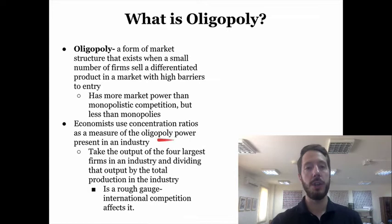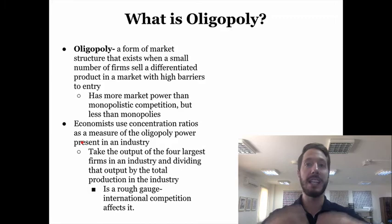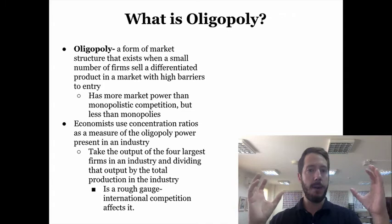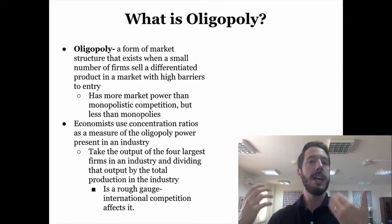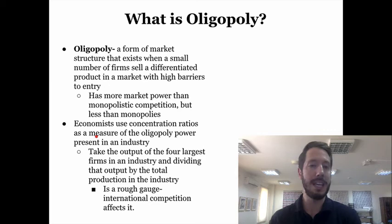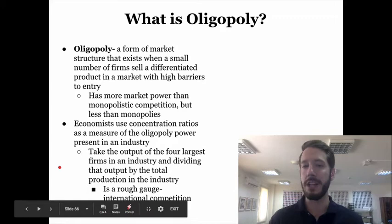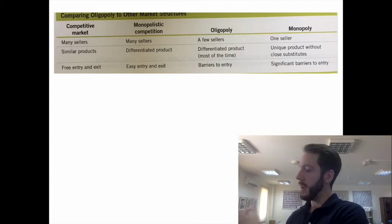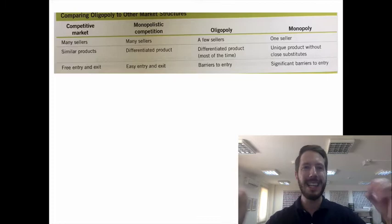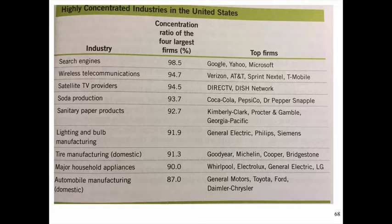Economists use concentration ratios to measure how much power an oligopoly has. They take the top four firms for a particular market and look at how much of the market those four companies control. The higher the concentration ratio, the stronger the oligopoly. It is a fairly rough gauge because with globalization, you also have to account for international competition. Here's a chart that shows the differences between all the market structures we've been talking about.